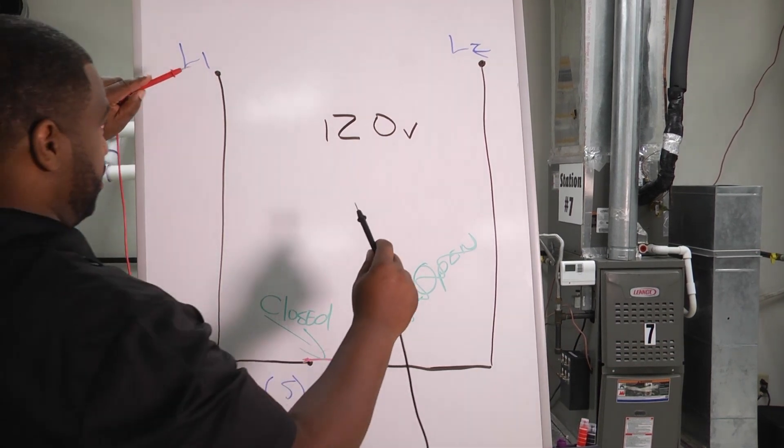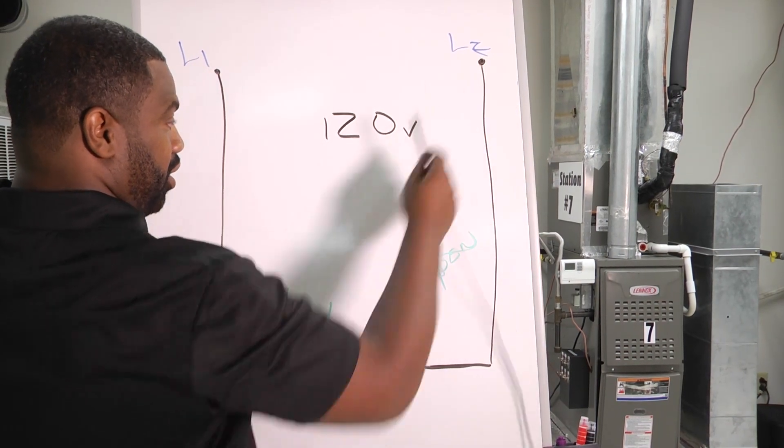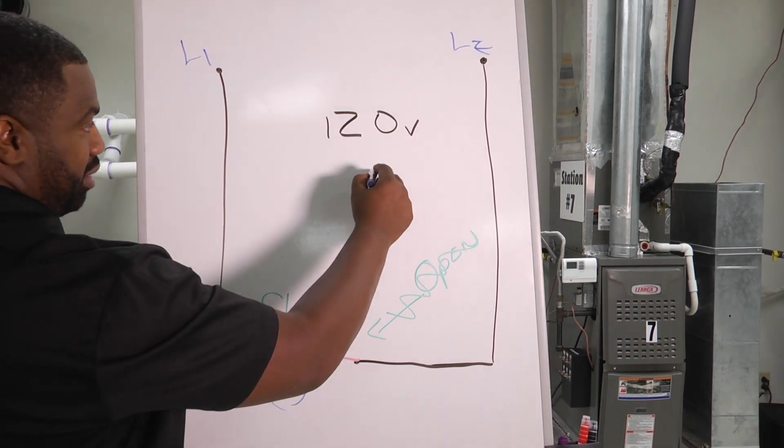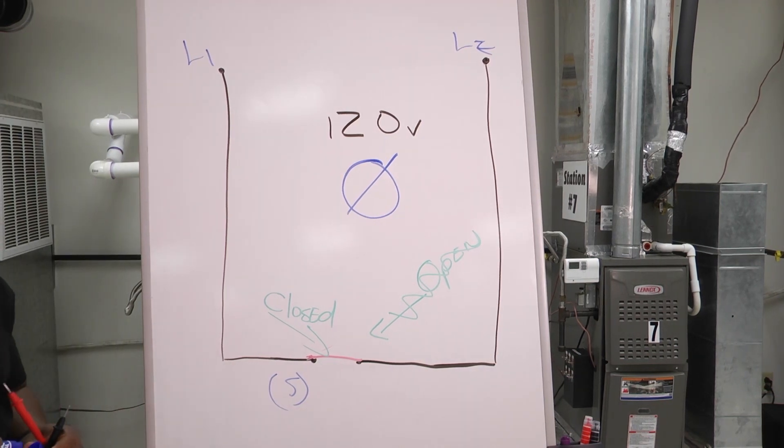So if we put our meters here, our leads here and here, guess what we would see then? Then we would see zero on our screen.